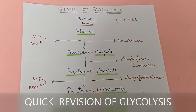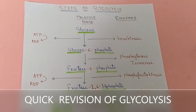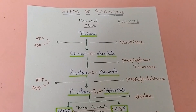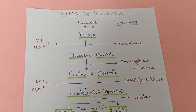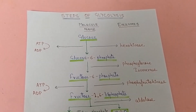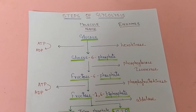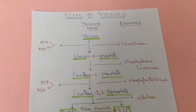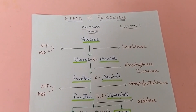Watch this video till the end. Glycolysis is the sequence of reactions that convert glucose into pyruvate. It contains 10 steps, and at each step there is involvement of an enzyme. We will look at all these steps and the enzymes involved in each.